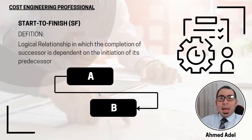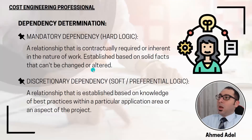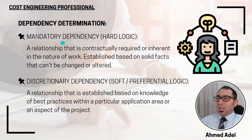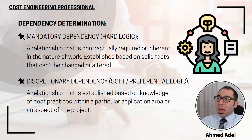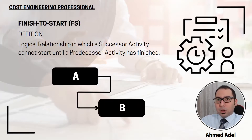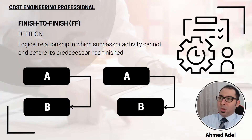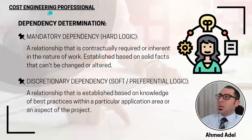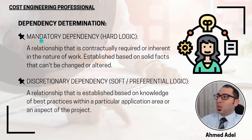So those are the four activity relationship types. Now, what is a dependency? We also have four types of activity dependency, and these four types can be applicable to any of the four relationships we just discussed.